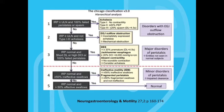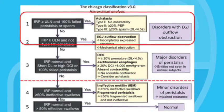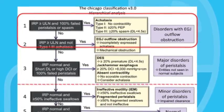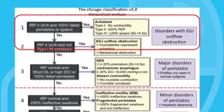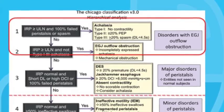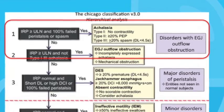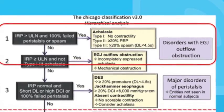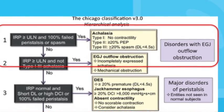If you know the IRP, the DCI, and the distal latency for a particular patient, you can diagnose their motility disorder. Our first priority in step one is to look at the IRP. If the IRP is greater than 15 millimeters of mercury, it suggests that the EGJ is not relaxing appropriately with swallows, which should raise our suspicions for achalasia. The next step is to look for evidence of failed peristalsis or simultaneous contractions in the esophageal body — in those situations the distal latency would be much shorter than 4.5 seconds. In the setting of an elevated IRP with failed peristalsis or spasms, we have grounds to make the diagnosis of achalasia.